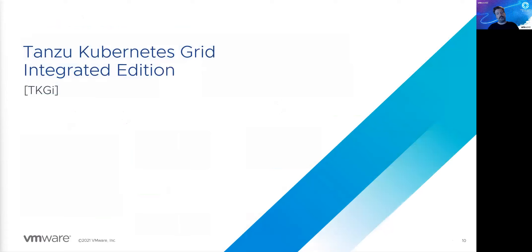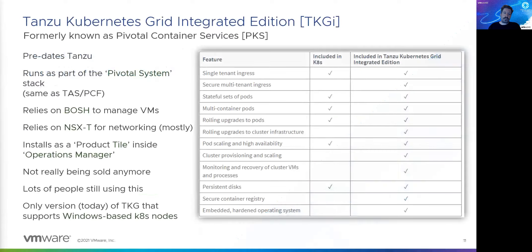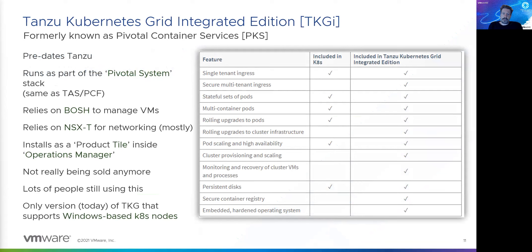Let's look at the different TKG versions in more depth. We'll start with the oldest: TKGI. TKGI was reacquired through the Pivotal acquisition — it predates Tanzu. It's quite an early managed Kubernetes distribution. Timelines are compressed in the Kubernetes world — the first GA version was 2018, which is actually not that long ago.